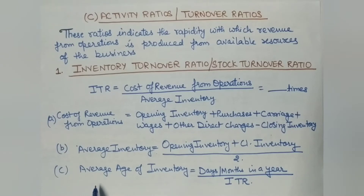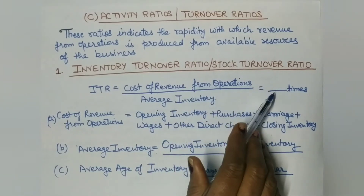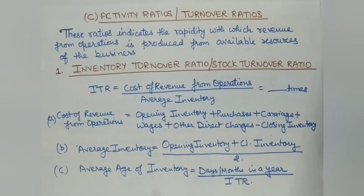We also calculate the average age of inventory — that is, how long stock stays with the business. The formula is: months in a year (12) or days in a year (365) divided by the inventory turnover ratio. This tells us whether inventory stays for 2 months, 3 months, 35 days, or 40 days — whatever the time period turns out to be.